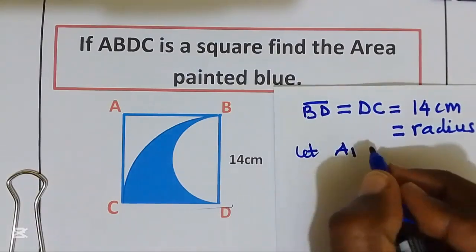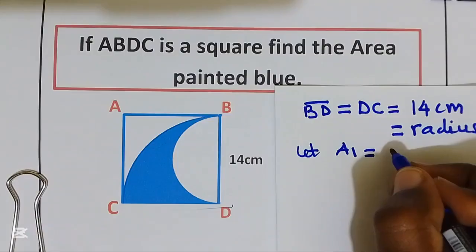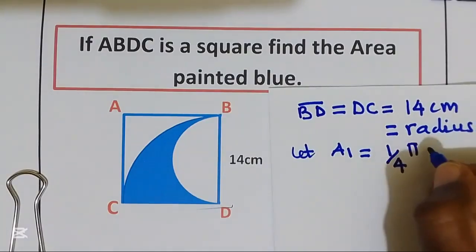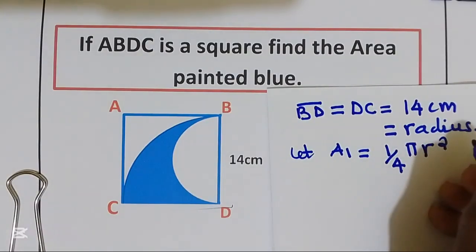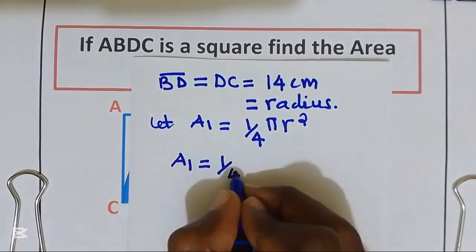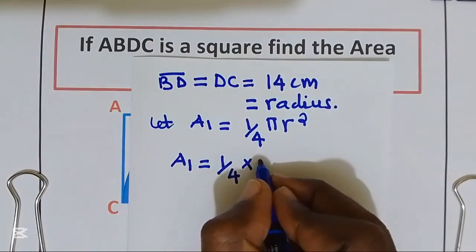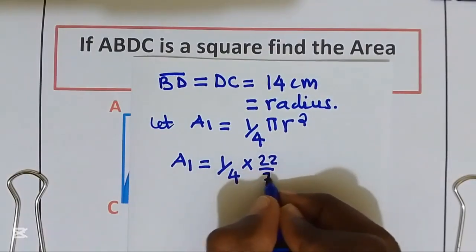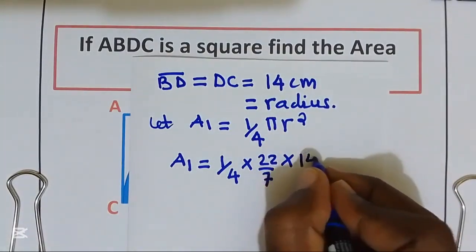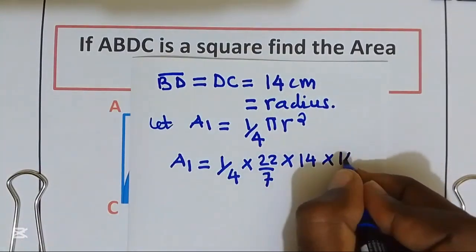Let area 1 equal the area of our quarter-circle, which is given by 1 over 4 pi r squared. Area 1 is equal to 1 over 4, multiply, I will use pi as 22 over 7, multiply by r, which is equal to 14, multiply by 14, again multiply by 14.